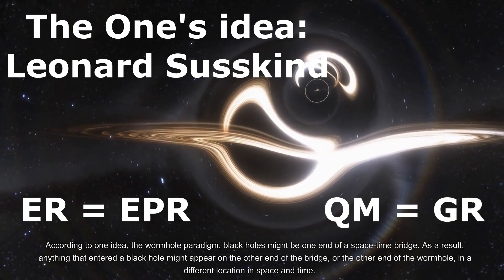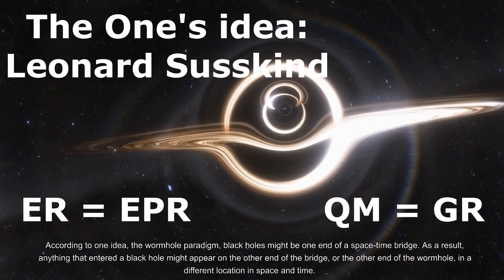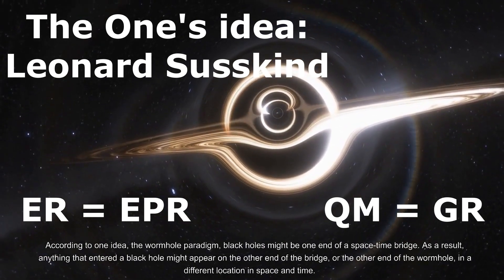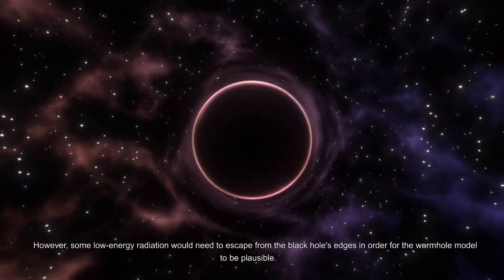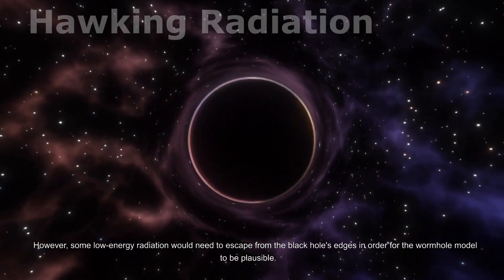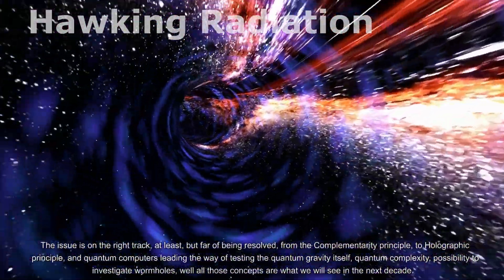As a result, anything that entered a black hole might appear on the other end of the bridge, or the other end of the wormhole, in a different location in space and time. However, some low-energy radiation would need to escape from the black hole's edges in order for the wormhole model to be plausible. The issue is on the right track at least, but far from being resolved.